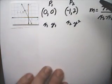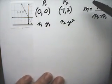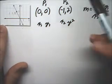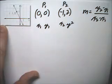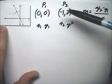So figuring out the slope, two points here. One of the points is negative 1, 2, and the other point is 0, 0.